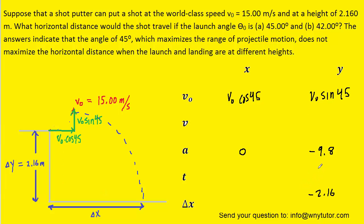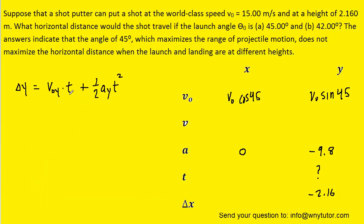With the information in the y direction, we can go ahead and calculate the time that the shot is in the air. And to do that, we can use this equation from kinematics. And we'll go ahead and plug in the known values. Notice we're doing this for the y direction again.